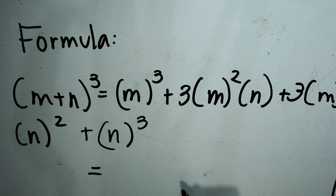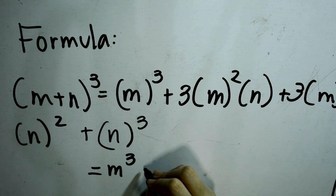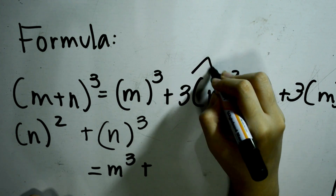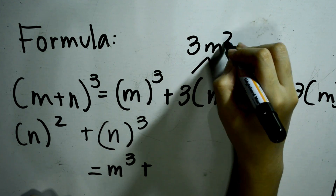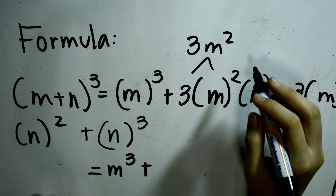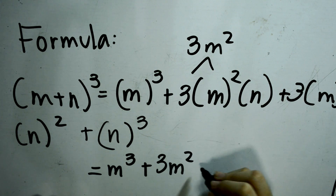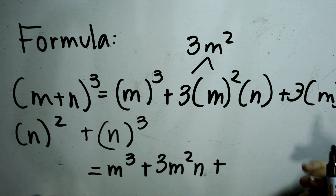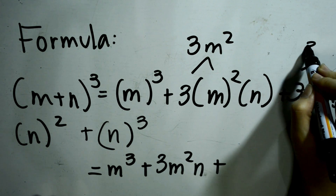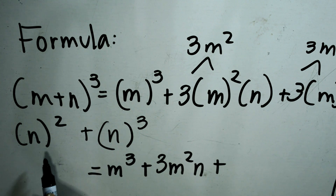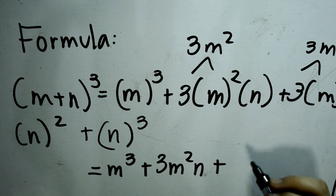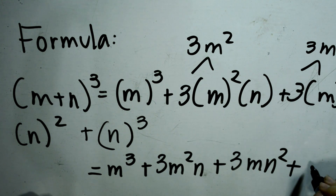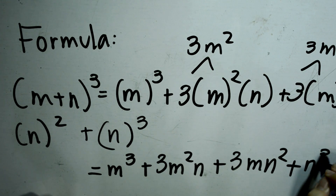So, it equals m cubed, plus 3m squared times n, which equals 3m squared n, plus 3m times n squared, which equals 3mn squared, and lastly, plus n cubed.